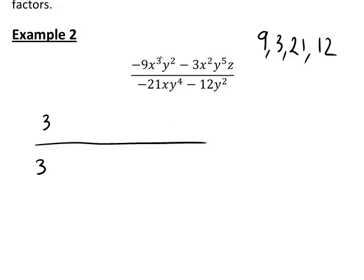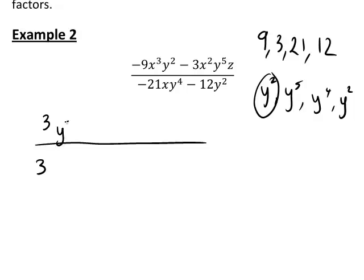Now let's look at the letters. Can we take out a power of x as a common factor? Both terms on the numerator contain x, and the first term on the denominator contains x, but the minus 12y² term does not contain x, so it is not possible to take x out as a common factor. What about y? On the numerator we have y⁵; on the denominator we have y⁴ in the first term and y² in the second. Since y appears in each term, the lowest power is y², so y² can be taken out as a common factor.